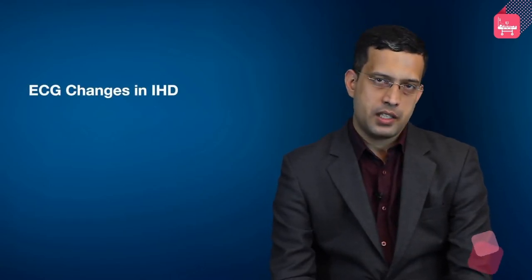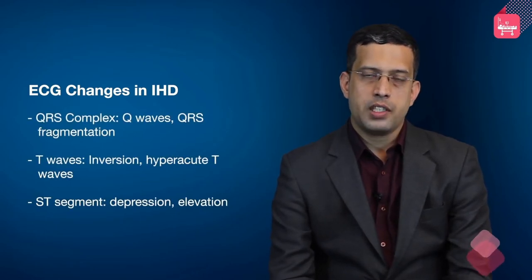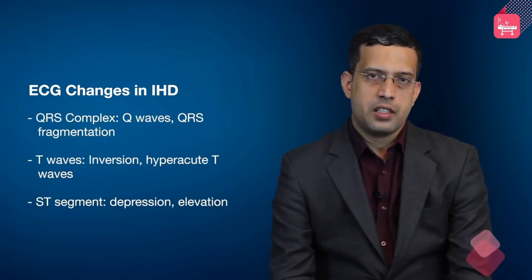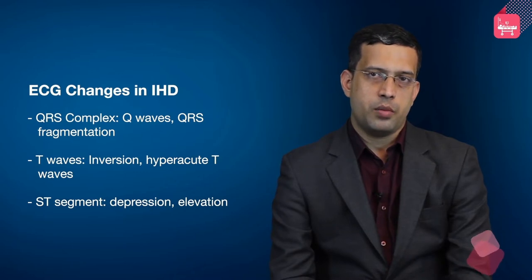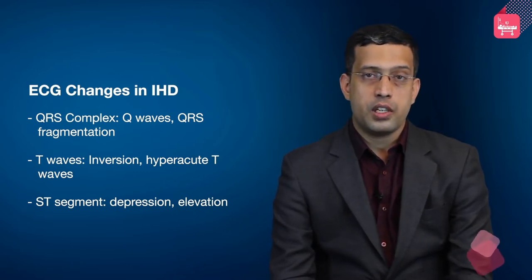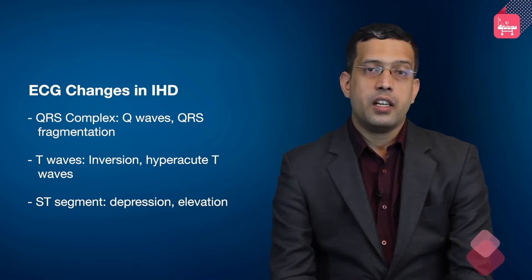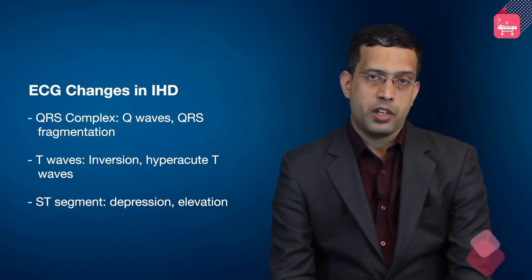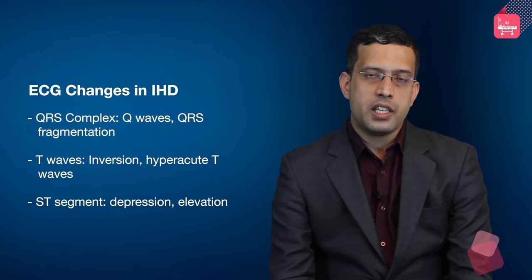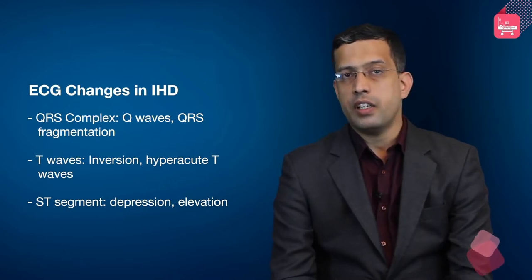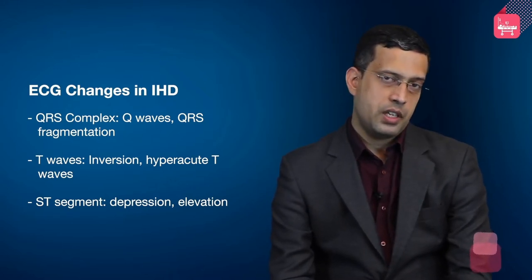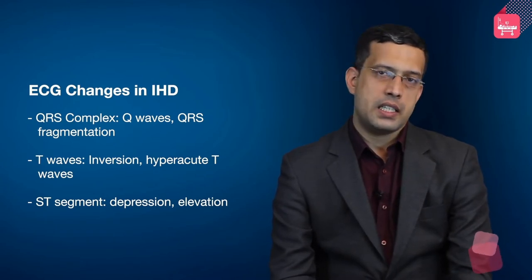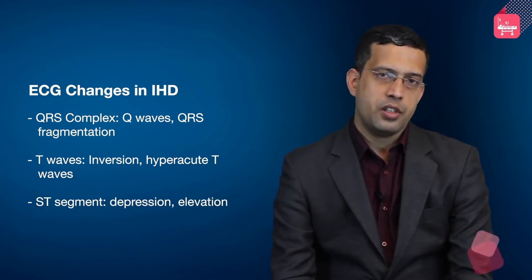The various waves in an ECG which can be affected by ischemic heart disease include the QRS complex — with Q waves and QRS fragmentation — the T waves, with T wave inversion and hyperacute T waves, and the ST segment, causing either depression or elevation.